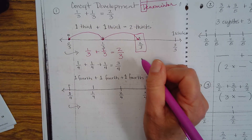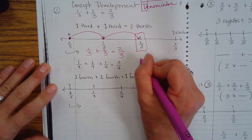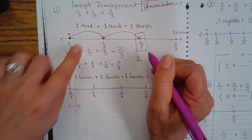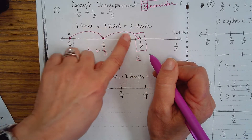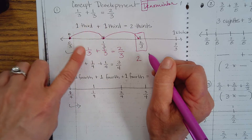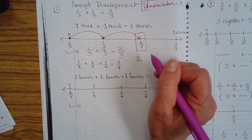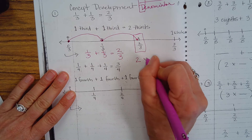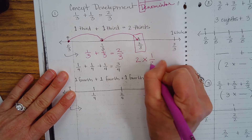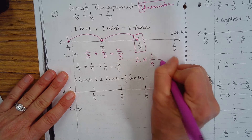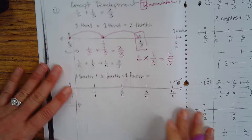Another way to think about it is I have two of the exact same thing — I have two one-thirds. So two times one-third is equal to two-thirds.